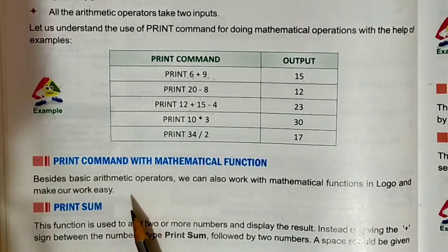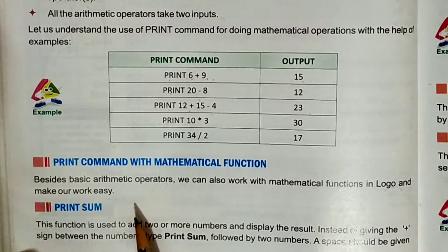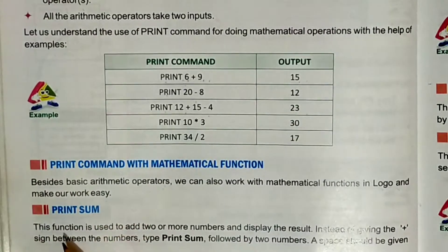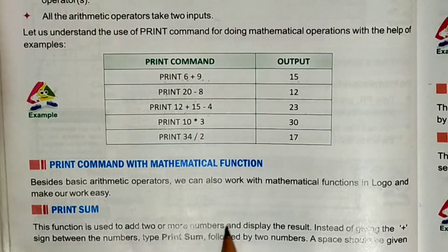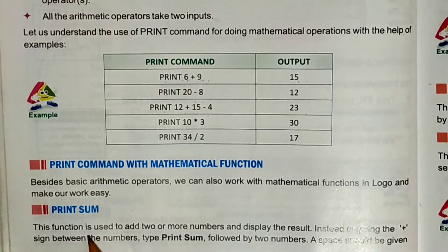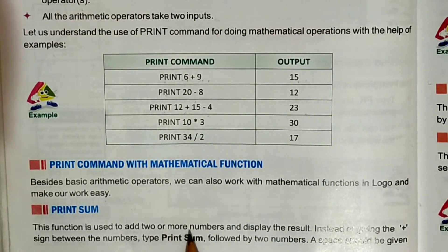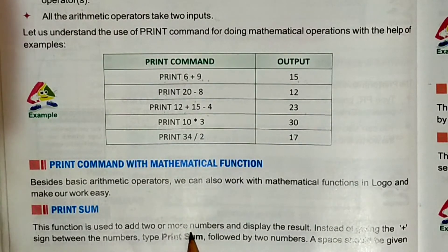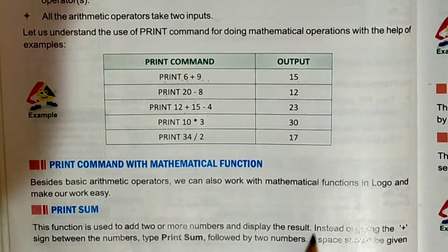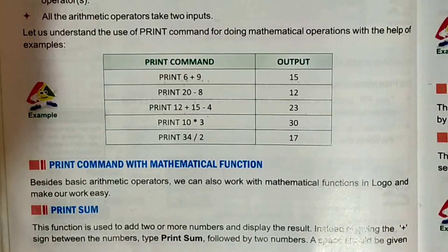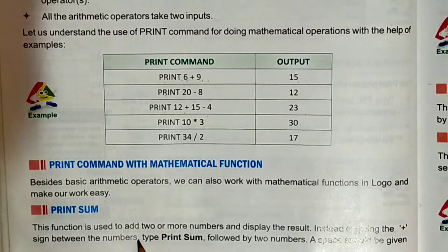Your first command is Print Sum. This function is used to add two or more numbers and display the result. Instead of giving the plus sign between the numbers, type Print Sum.